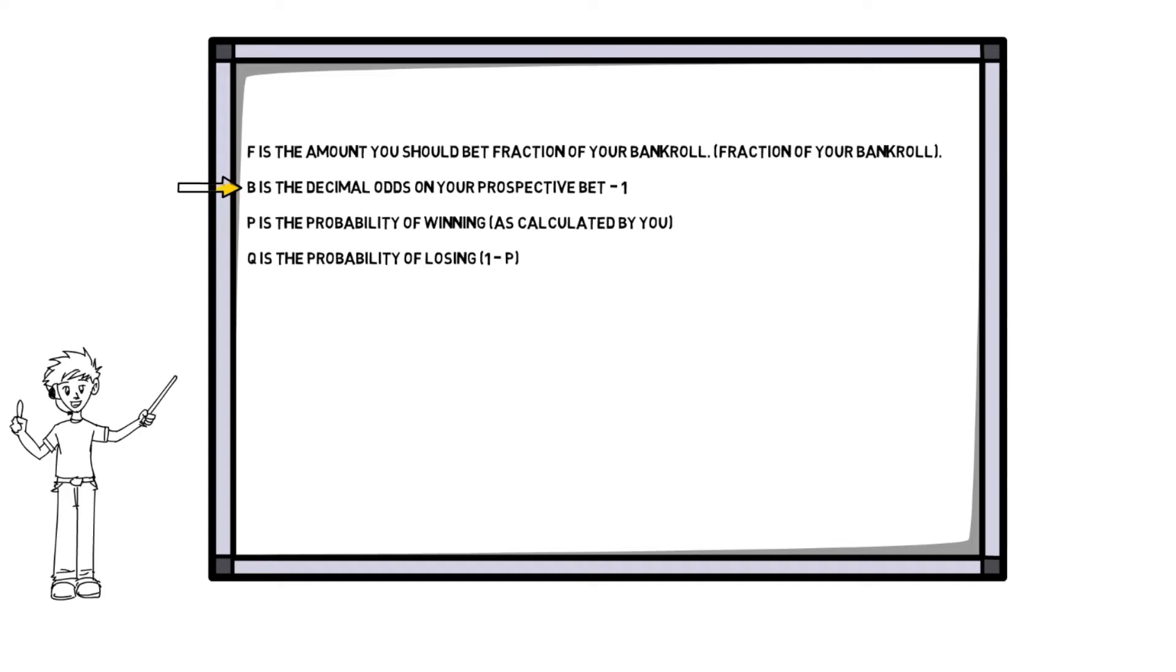Here, B refers to the multiple of the available odds on the bet in question. For instance, if the decimal odds for a bet are 4.0, this means B is 3.